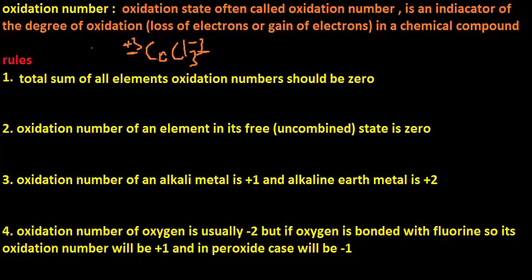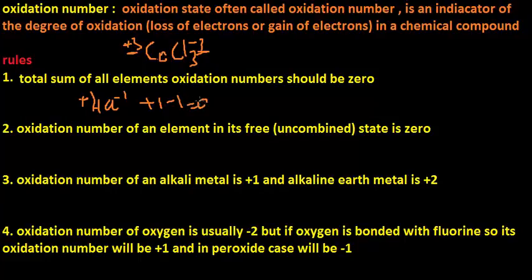Now here are some rules for calculating oxidation number. Rule number one: the total sum of all elements' oxidation numbers should be zero. For example, in HCl, chloride has minus one and hydrogen has plus one — the sum of plus one and minus one equals zero. So the total sum of all elements' oxidation numbers should be zero.